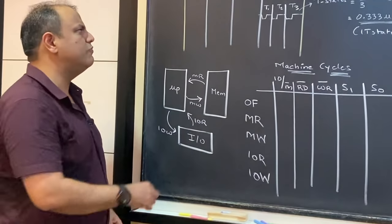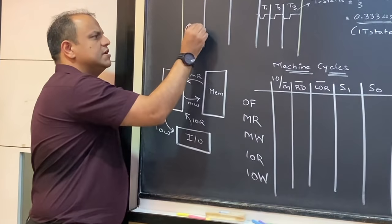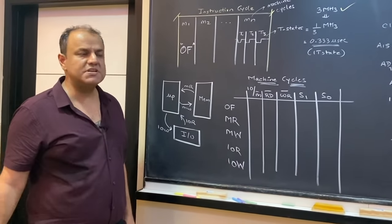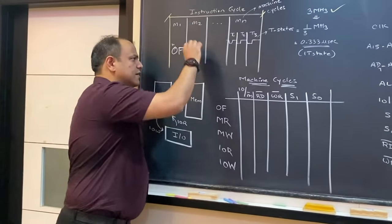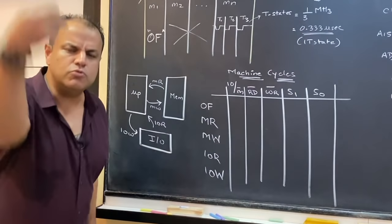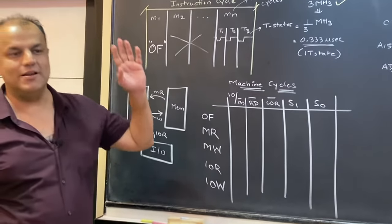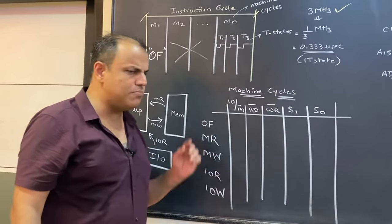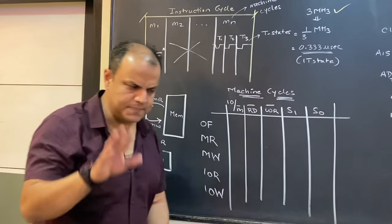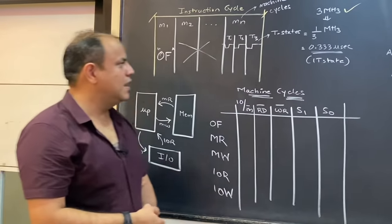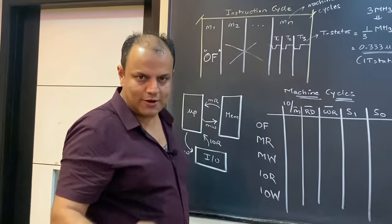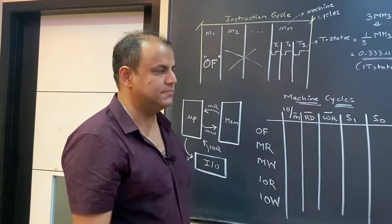इनके अलावा एक बहुत ही important machine cycle होता है जिसको बोलते हैं opcode fetch। हर instruction की शुरुवात होती है opcode fetch machine cycle के साथ। कोई-कोई instruction में opcode fetch के बाद कुछ भी नहीं लगता, मगर opcode fetch तो पक्का लगता है — यह सबसे important machine cycle है। पहले ये चार सीखेंगे, फिर इस पर आएंगे।